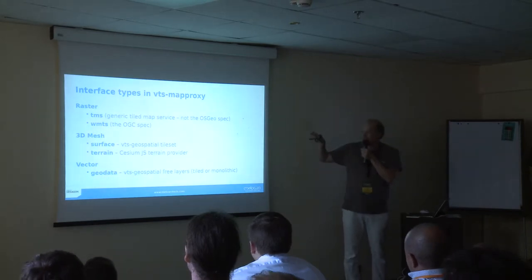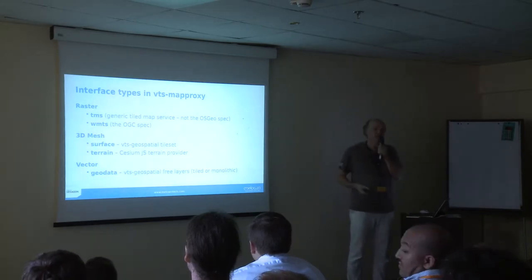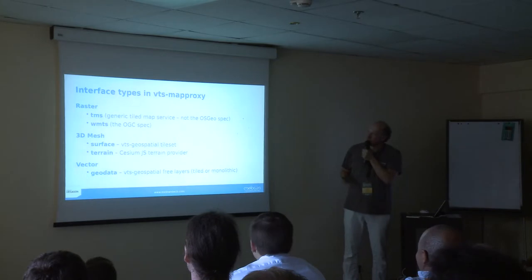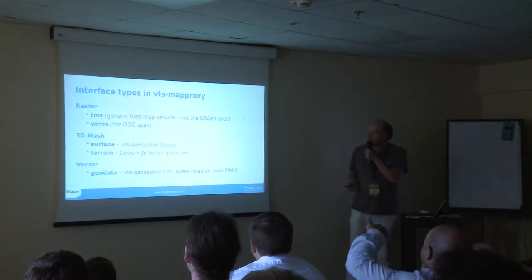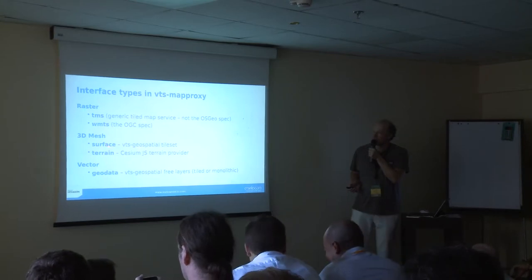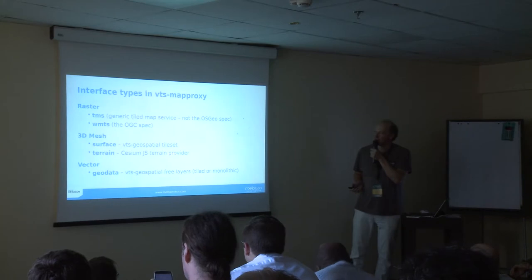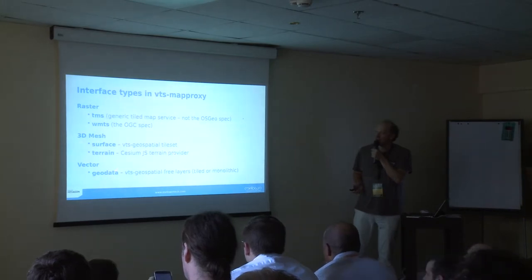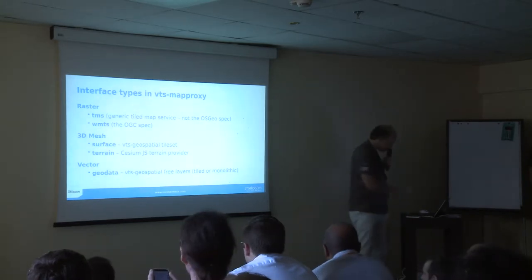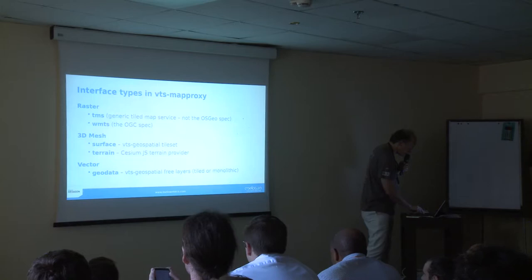There are two 3D mesh interface types: Surface, which is specific to VTS Geospatial, and Terrain, the Cesium.js terrain provider. And there's one vector format — vector Geodata, also specific to VDS Geospatial. So five interface types total within MapProxy.